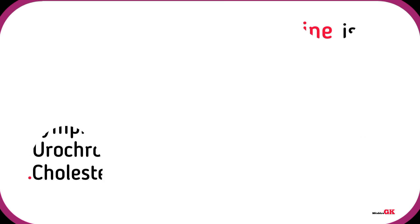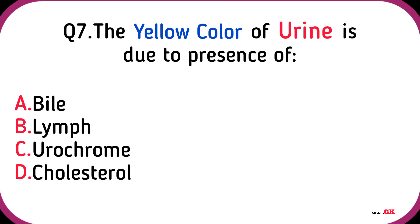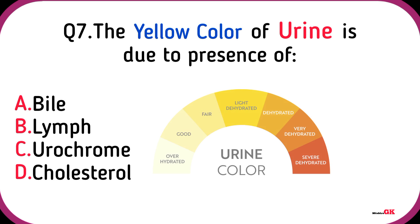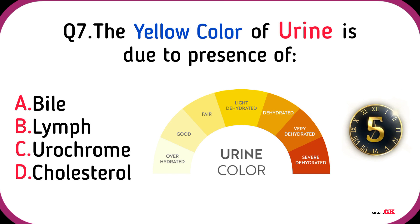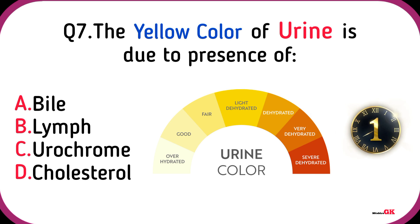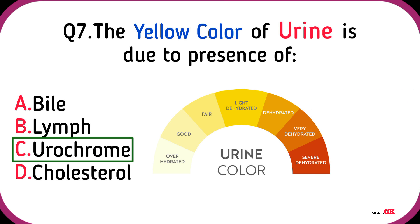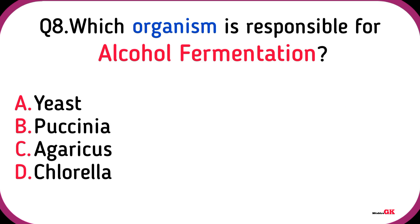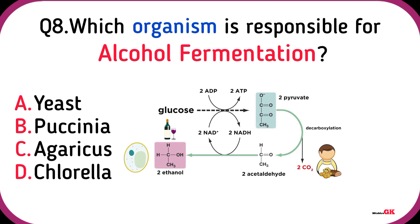The yellow color of urine is due to the presence of urochrome. Which organism is responsible for alcohol fermentation? Yeast.